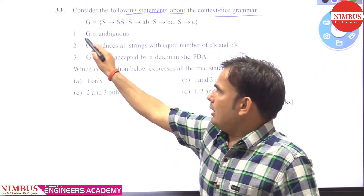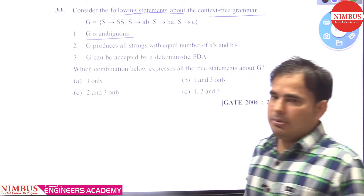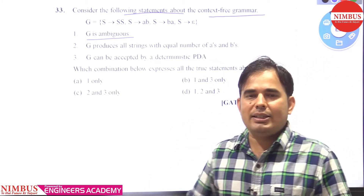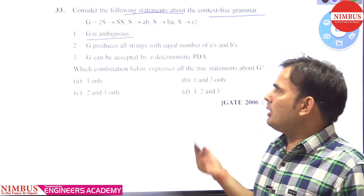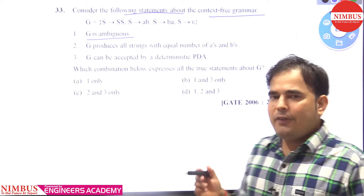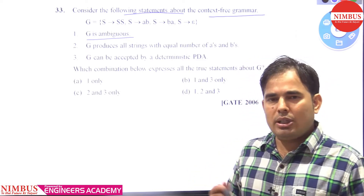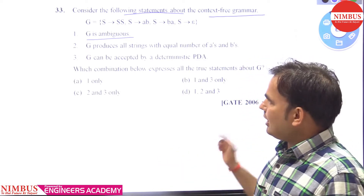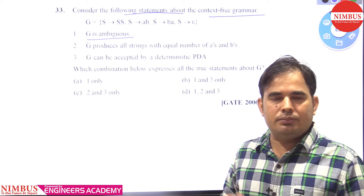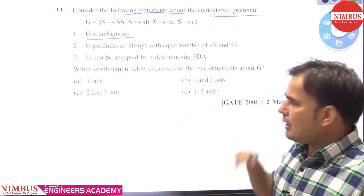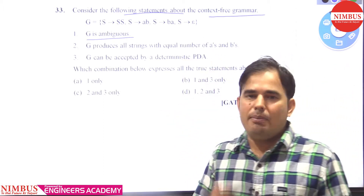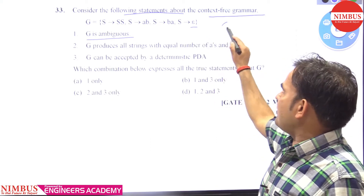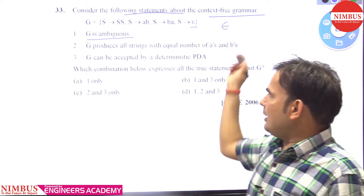The first statement says G is ambiguous. How can we check the ambiguity of the grammar? If any grammar is producing more than one parse tree for the same string, then we can say that grammar is an ambiguous grammar. The minimum string here is epsilon, so let's check if it generates more than one parse tree for epsilon.